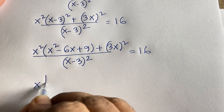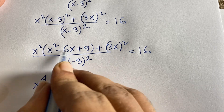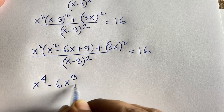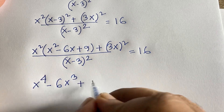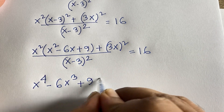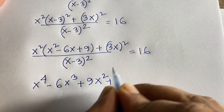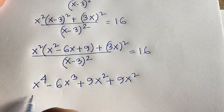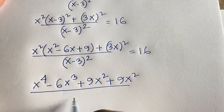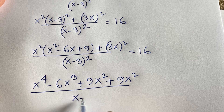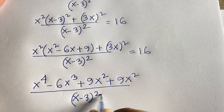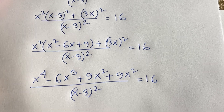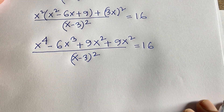Expanding x² times (x²-6x+9) gives x⁴ - 6x³ + 9x². And (3x)² = 9x². So we have x⁴ - 6x³ + 9x² + 9x², all over (x-3)² = 16.